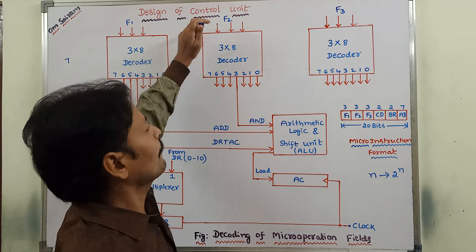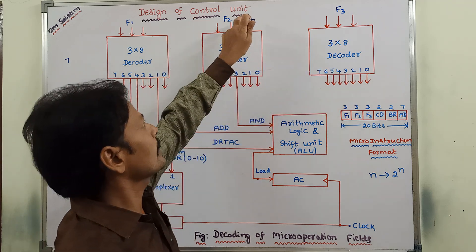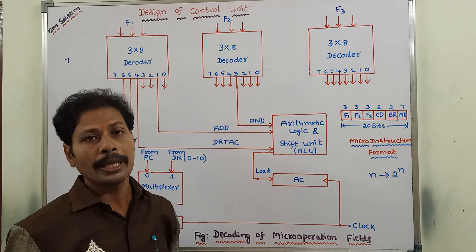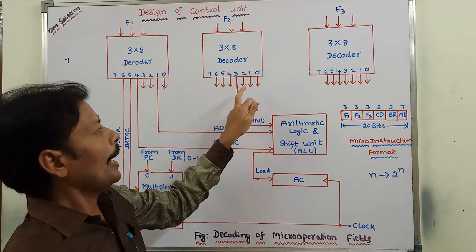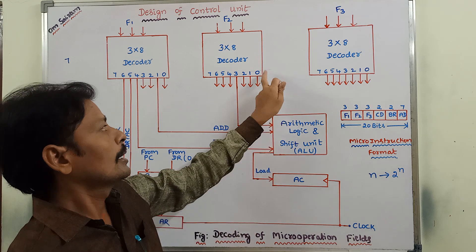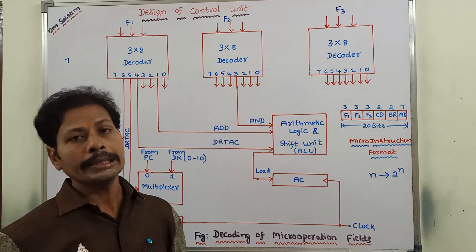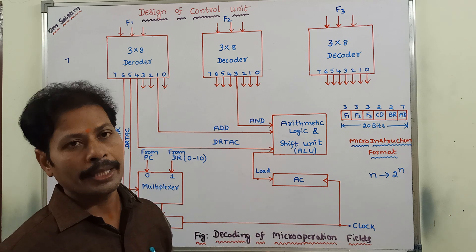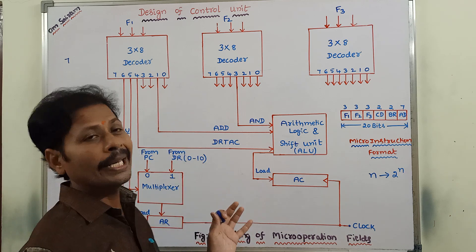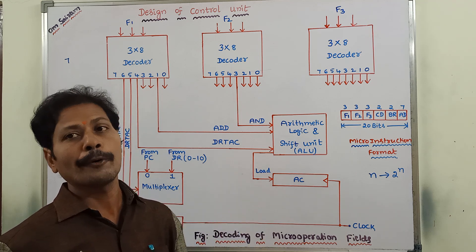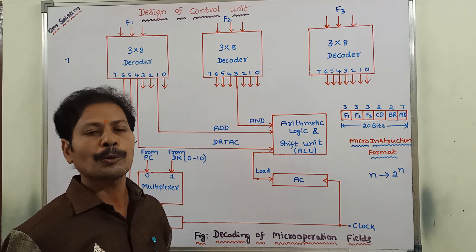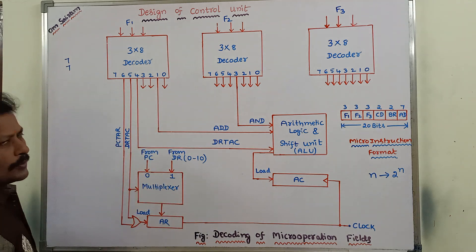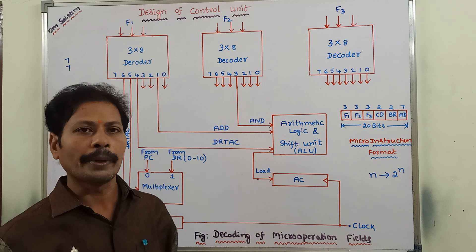Next, the F2 field also contains 3 bits. These 3 bits are sent to a decoder, which produces 8 outputs (0 to 7). Among those 8 outputs, one output does not perform any operation. The remaining 7 outputs are used for performing specific microoperations. So from the F2 field, we are performing 7 microoperations.